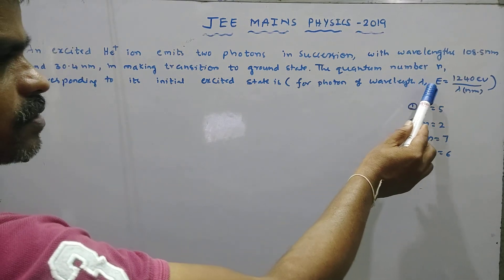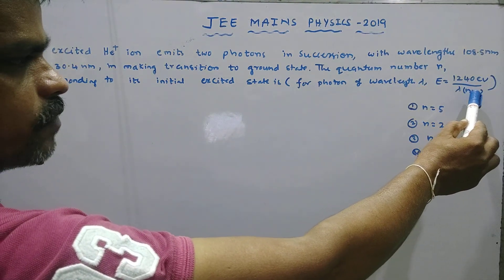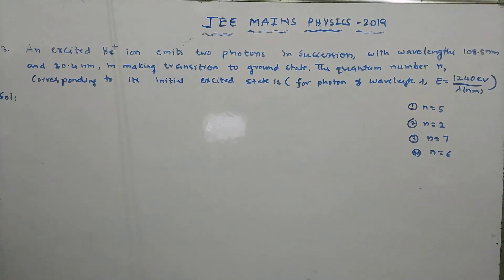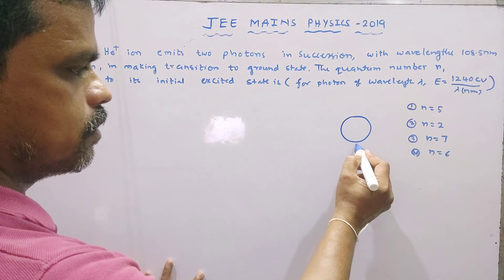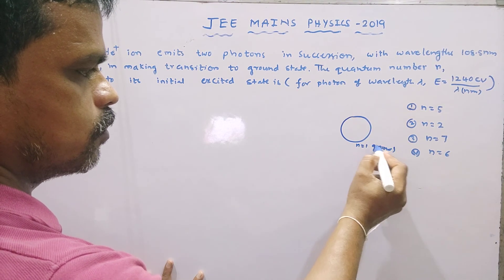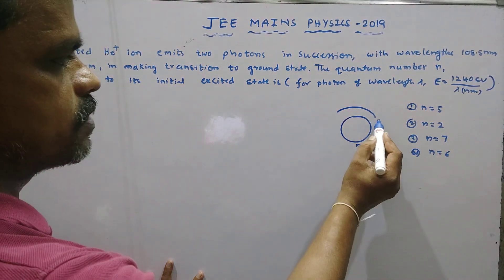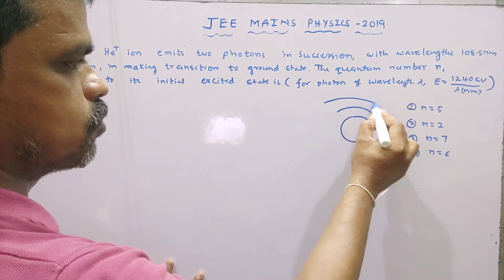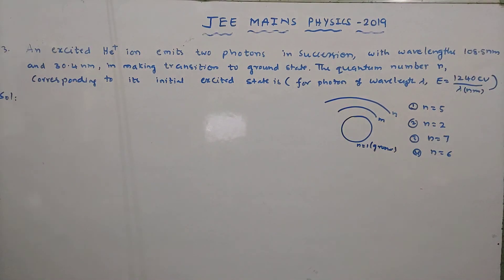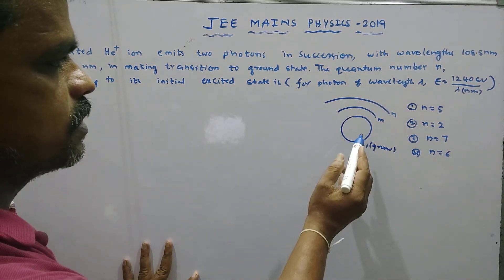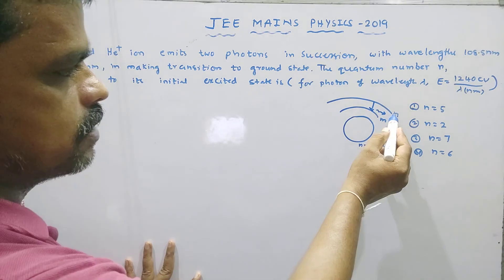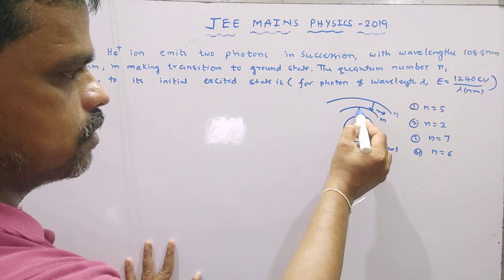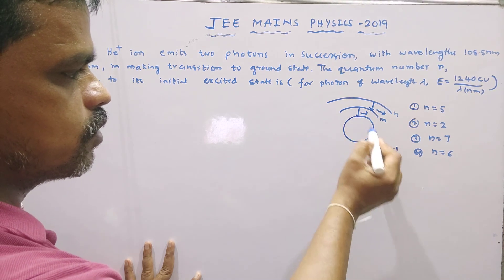For a photon, energy E equals 1240 electron volt nanometer divided by lambda, where lambda is in nanometers. For helium plus ion, we have an energy level diagram: ground state at n=1, one excited state at m, and one more excited state at n. The ion emits two photons in succession — first the electron jumps from n to m, then one more photon is emitted as the electron jumps from m to ground state.